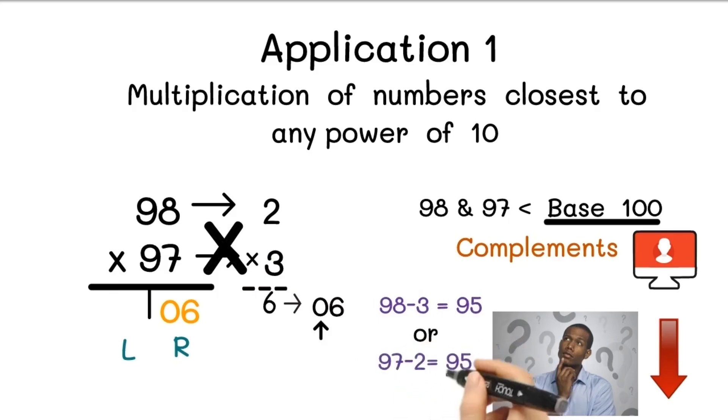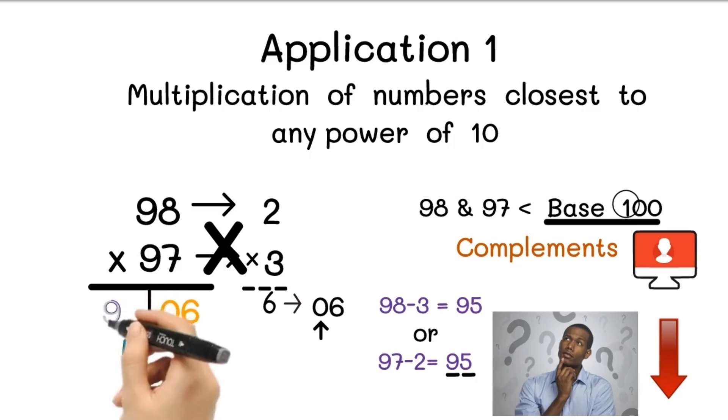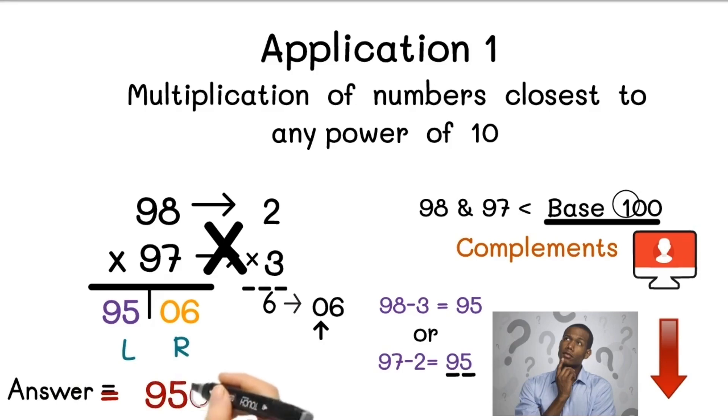So we will take one of them and multiply with the 100 plus digit of base number, which is 1. So 95 multiply by 1 equals 95. This is our left part, and write down 95 left to the 06. So in this way we got the answer: 98 multiply by 97 equals 9506.